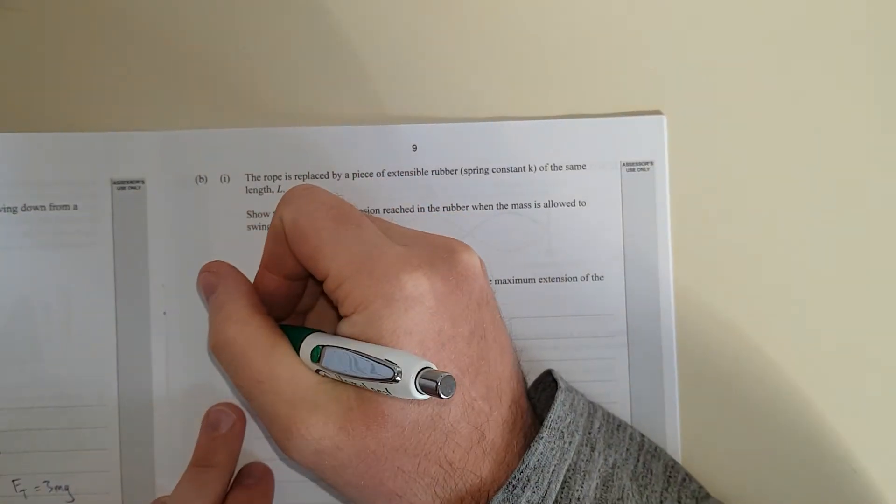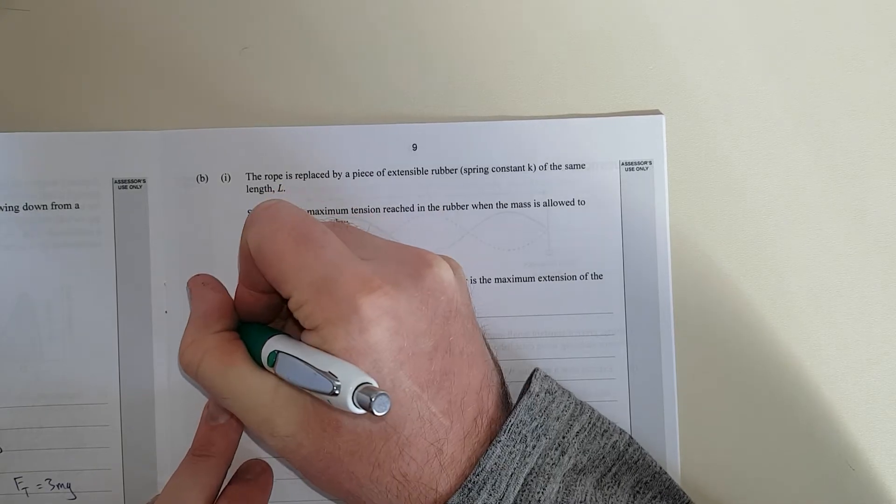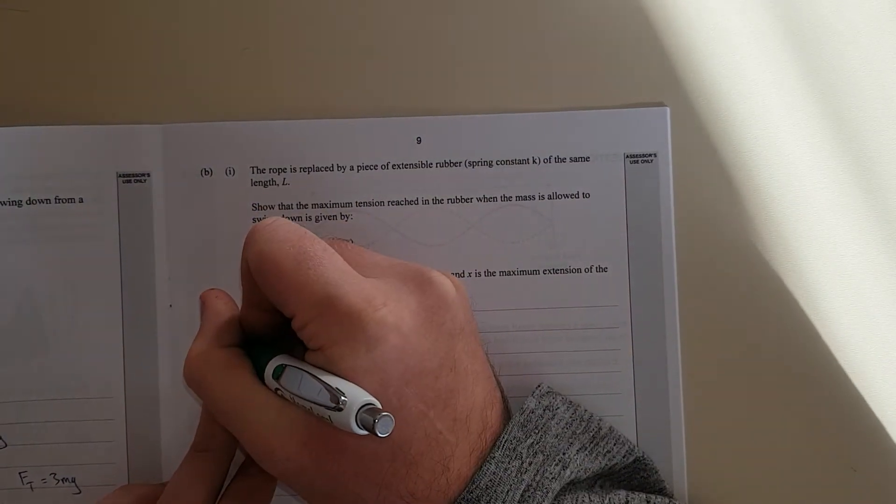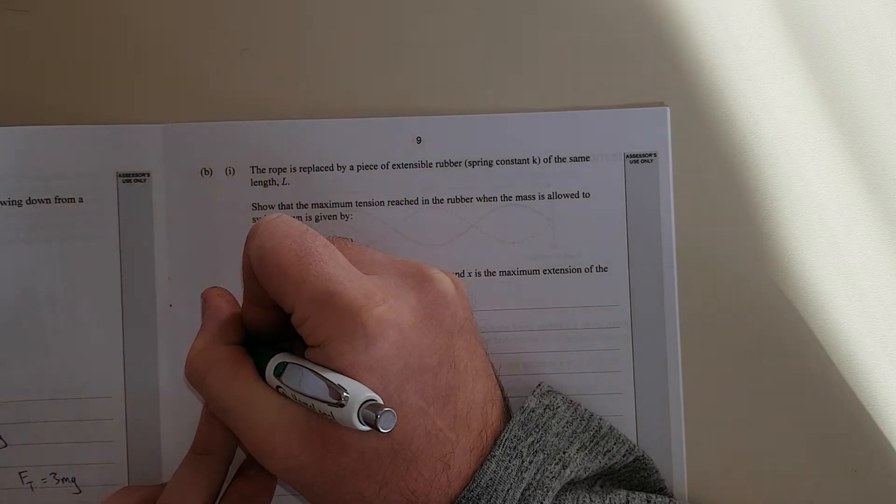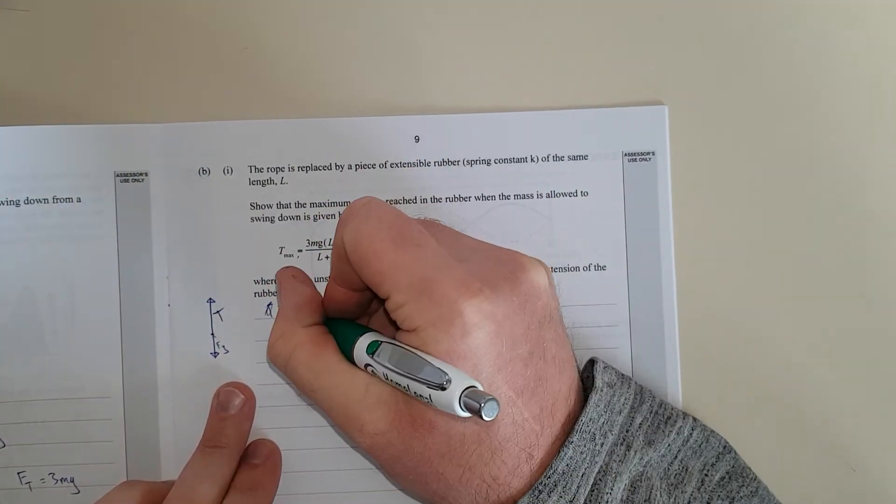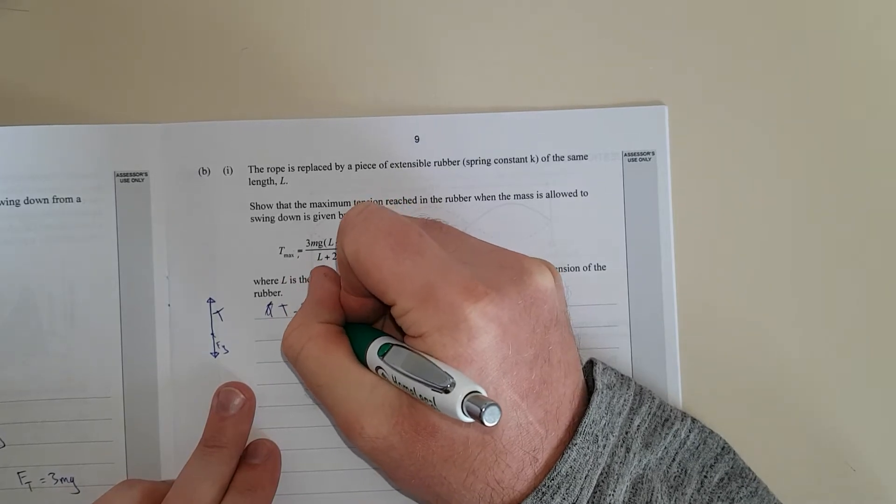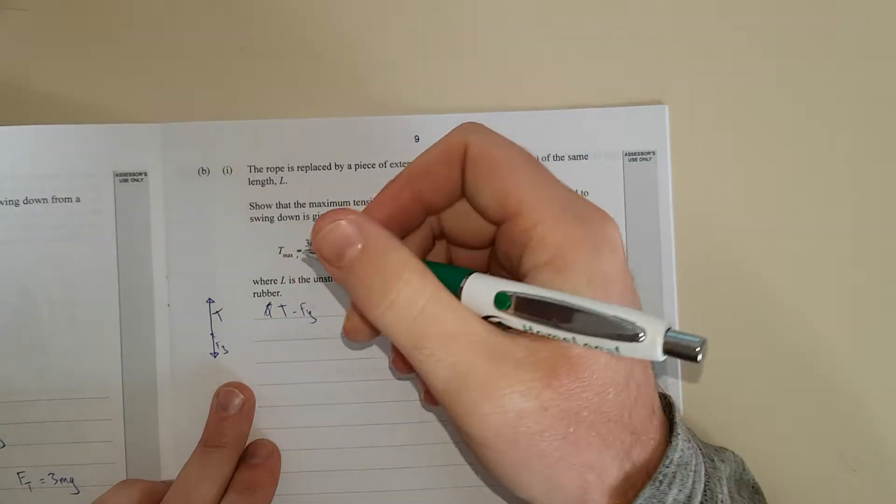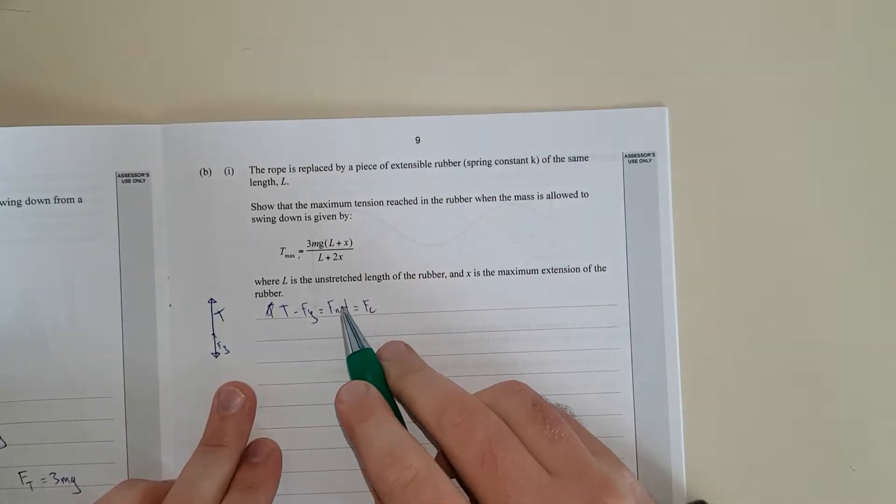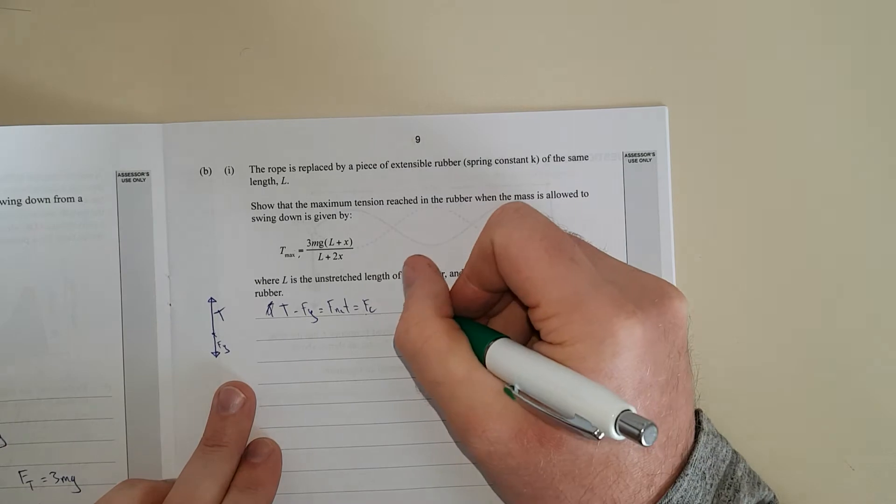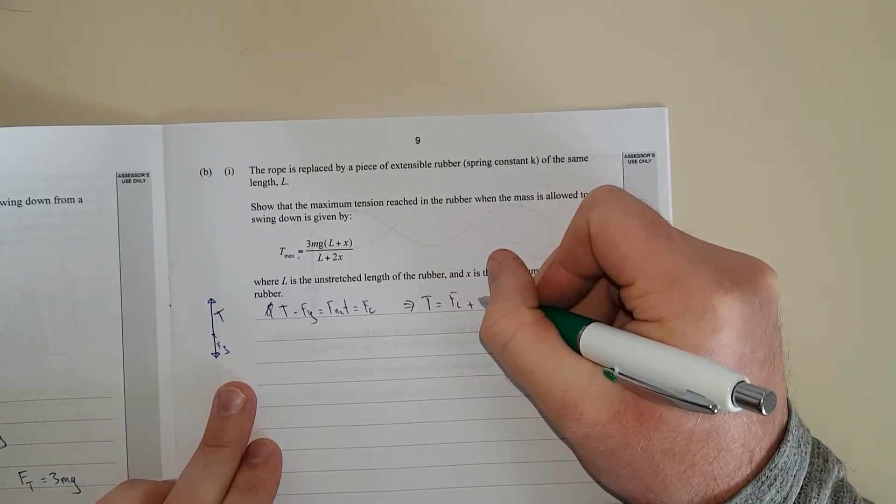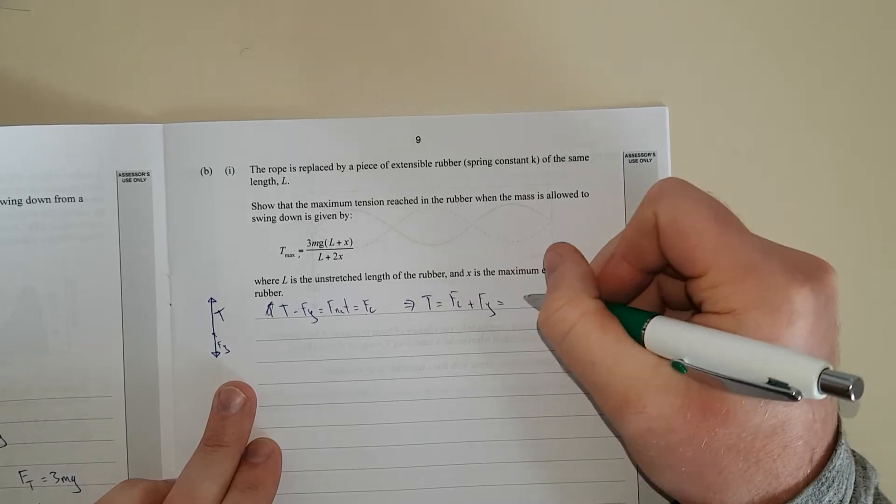So again, we're going to have our free body diagram. We're going to have tension force T and down here is going to be Fg. And then again, T minus Fg equals Fnet, which equals Fc. Rearranged, we have T is equal to Fc plus Fg, pretty much the same from before.